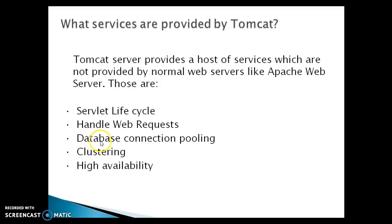The next service provided by Tomcat is database connection pooling. It is a technique to allow multiple clients to make use of a cached set of shared and reusable connection objects, providing access to the database. A connection pooling feature is supported by Tomcat. As we know, opening and closing a database connection is an expensive process, and hence connection pooling improves the performance of database execution, for which we maintain connection objects in the pool.